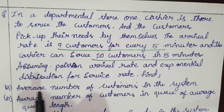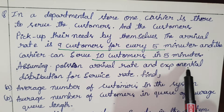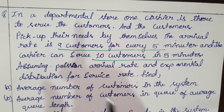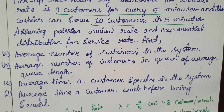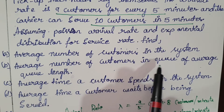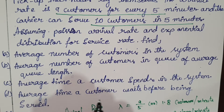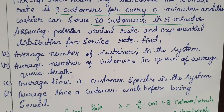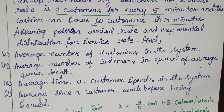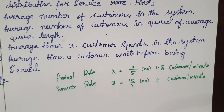Assume Poisson arrival rate and exponential distribution for service rate. Find the following: (1) average number of customers in the system, (2) average number of customers in the queue or average queue length, (3) average time a customer spends in the system, and (4) average time a customer waits before being served.